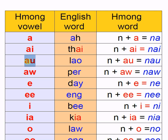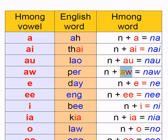The next vowel is AO, like the word 'Lao'. The Hmong example word is Nau. It is similar to 'P' except without the curly tongue. The example word is Nau.